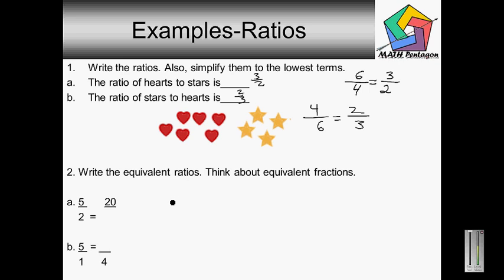Okay, let's go to our next set of problems. Write the equivalent ratios — think about equivalent fractions. So we have five over two equals twenty over blank.